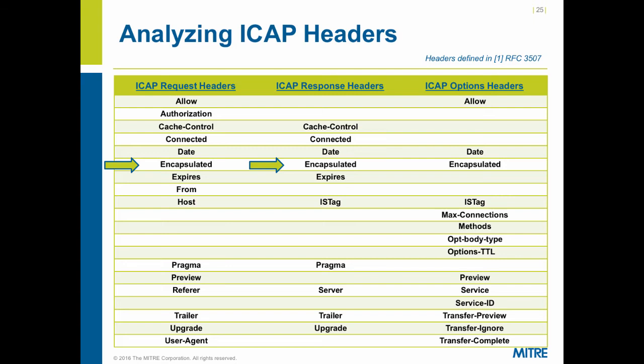ICAP headers: RFC 3507 defines a lot of different headers. Some are specific to ICAP request messages, some to ICAP response messages, some to ICAP options, and some are common across all three. The ones that matter most for analysis are the encapsulated header, because that tells you the structure of the ICAP payload — whether there's a request header, a response header, a response body, a request body. It tells you the structure and is critical for the analyzer to know what to pull out and how to identify each piece.